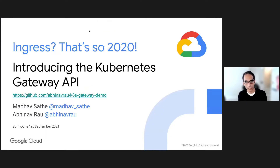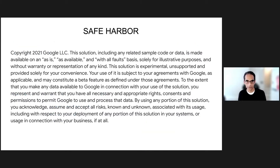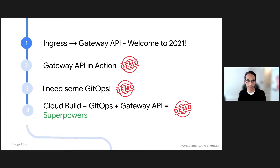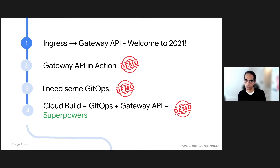So we're here to talk about the Kubernetes Gateway API. We're going to cover ingress first and why the Gateway API is an evolution of the ingress feature. Then we'll see the Gateway API in action, cover GitOps and why that's important, and finally wrap up with how Cloud Build plus GitOps plus the Gateway API really leads to superpowers. So let's get started.